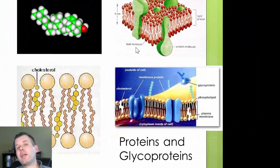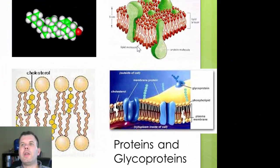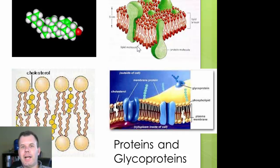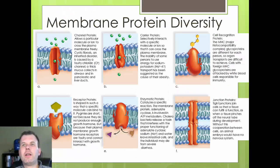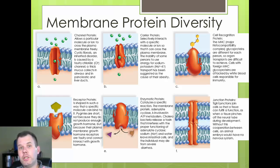The second most important component of a membrane is the proteins. Proteins provide functions for things to get in and out of the cell. The different types include channel proteins, carriers, cell recognition proteins, receptors, enzymatic proteins, and tight junctions. All of these provide various functions either for the cells or for the membrane itself.